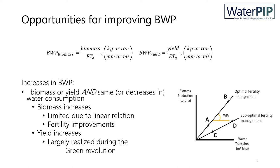Optimal fertility management could potentially shift the curve of water productivity to higher levels. However, improvements in fertility have reached the limits, especially in irrigated agriculture.